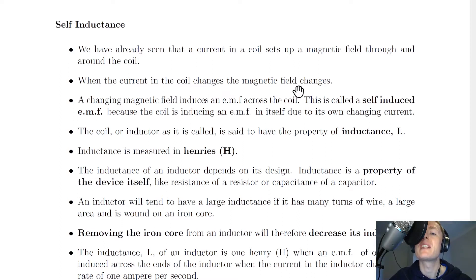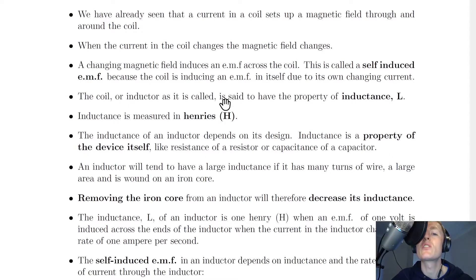So when the current in the coil changes, the magnetic field changes and this changing magnetic field induces an EMF across the coil. And this will, according to Lenz's law, oppose its own changing current. We say that the coil, or inductor as it is called, is said to have the property of inductance L.